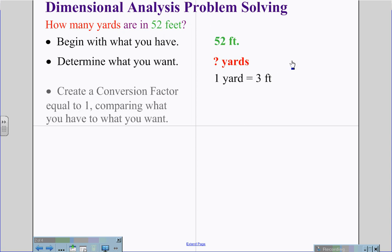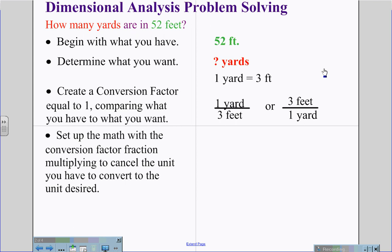We are going to create a conversion factor equal to one, comparing what you have to what you want. There are two possibilities here. We can put one yard over three feet, or we can put three feet over one yard. We set up the math with the conversion factor, a fraction multiplying to cancel the unit you have to convert it to the desired unit. In this case, we're going to say 52 feet times one yard over three feet.